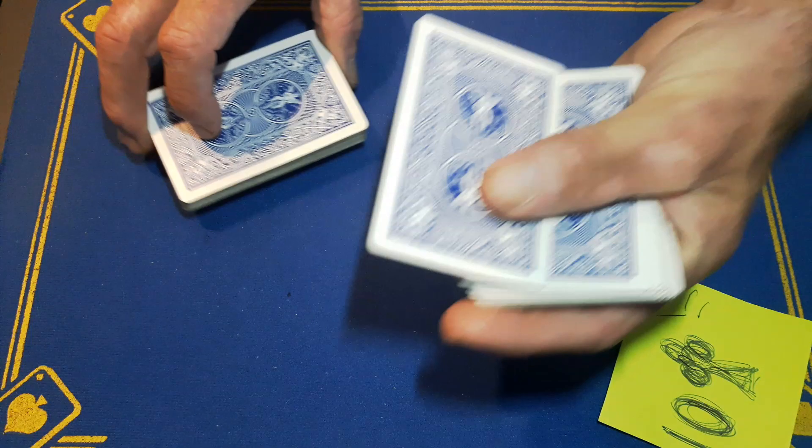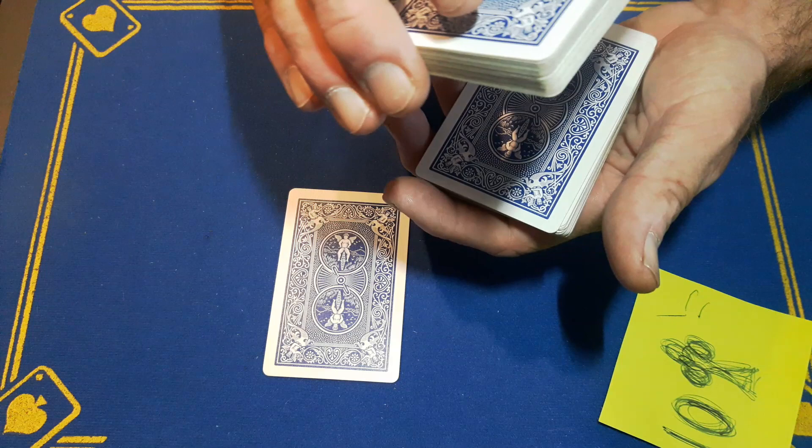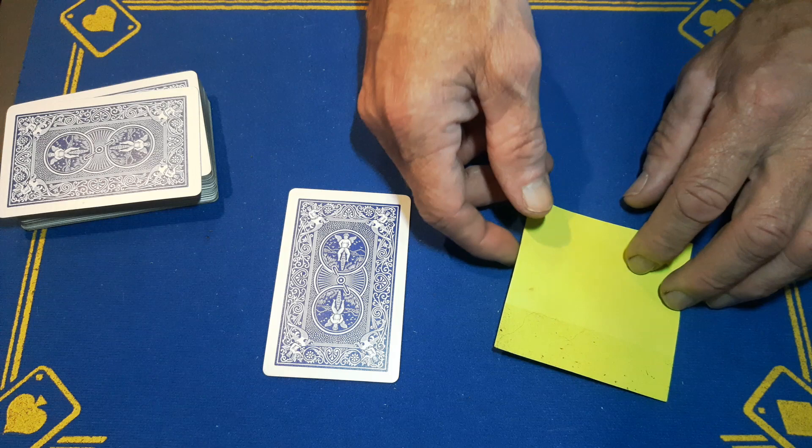As you turn this ten over, you're going to deposit this jack on top of the ten. So when you throw this card down, they think this is the ten of clubs. You can get rid of this now, put it aside.